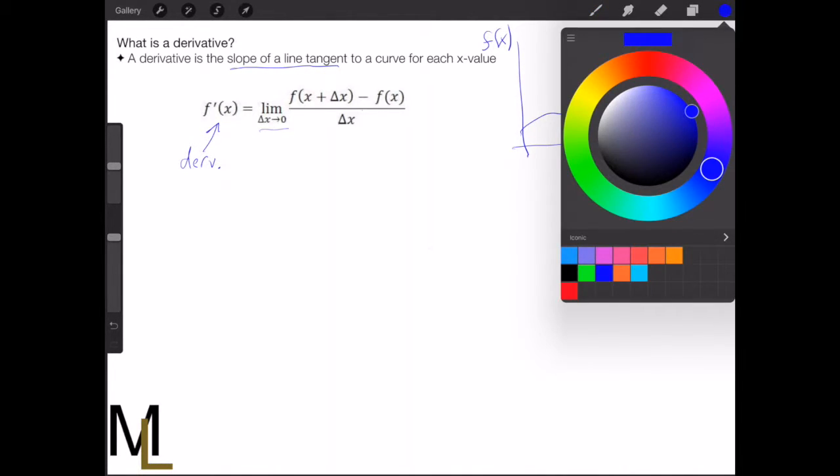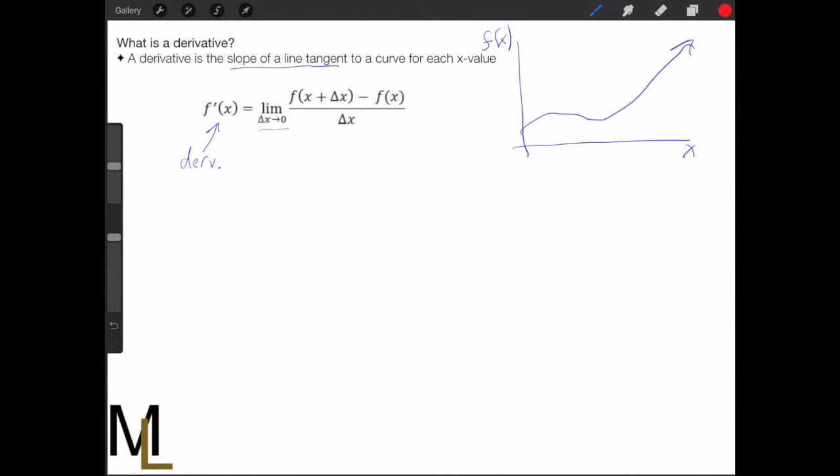What we're going to do is pick a point along this curve, like here, and we'll call that x. The corresponding y value of that point will be f of x, because it's some arbitrary function called f.